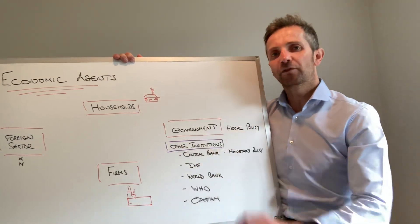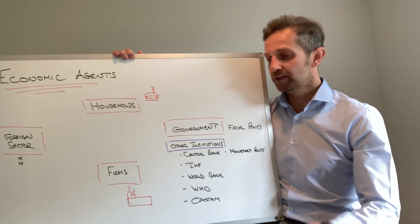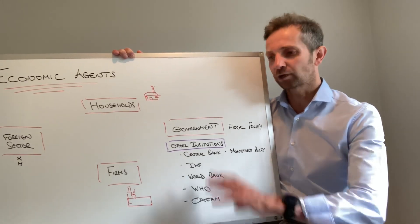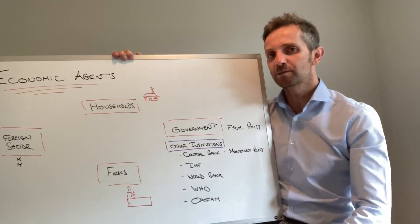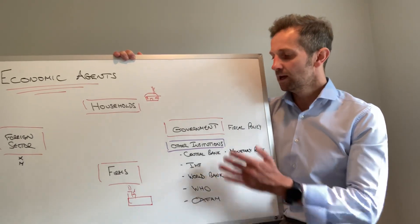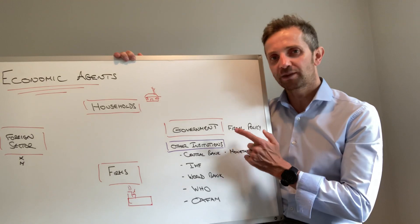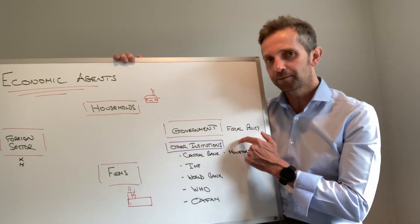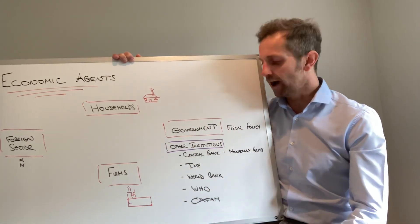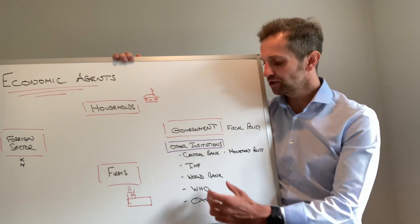Coming on to the fourth component, the government and its role in the economy is obviously very substantial across the globe at the moment in the midst of the global pandemic. But generally speaking, we're thinking about fiscal policy, supply side policy, and wrapped up with that, we're also thinking about other institutions.